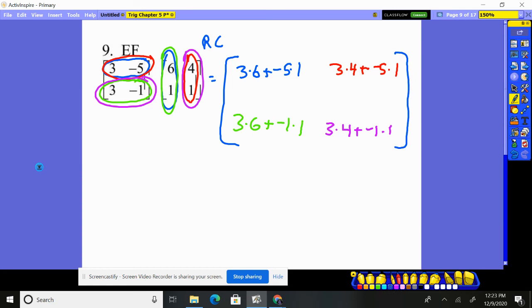Now all I got to do is clean it up. I'm going to have a two by two answer here. So I have 18 minus five. I have what? 12 minus five. I have 18 minus one and I have 12 minus one. Okay, sort of noticed a little pattern there, but don't worry about that. 18 minus five is 13. 12 minus five is seven. 18 minus one here is 17. 12 minus one is 11. And there we have our answer to multiplying these two matrices.